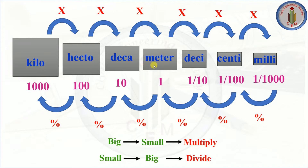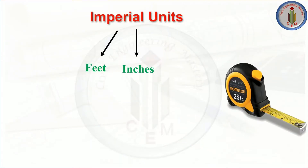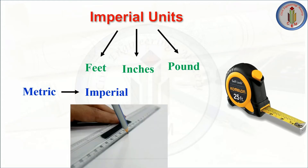For weight, gram is the base unit — decigram, centigram, milligram are smaller; decagram, hectogram, and kilogram are bigger. For volume, liter is the base unit — deciliter, centiliter, milliliter are smaller; decaliter, hectoliter, and kiloliter are bigger. Imperial units consist of feet, inches, and pound. For length and area we use feet and inches; weight is measured in pounds, though we commonly use kilograms, kilonewtons, and tons.